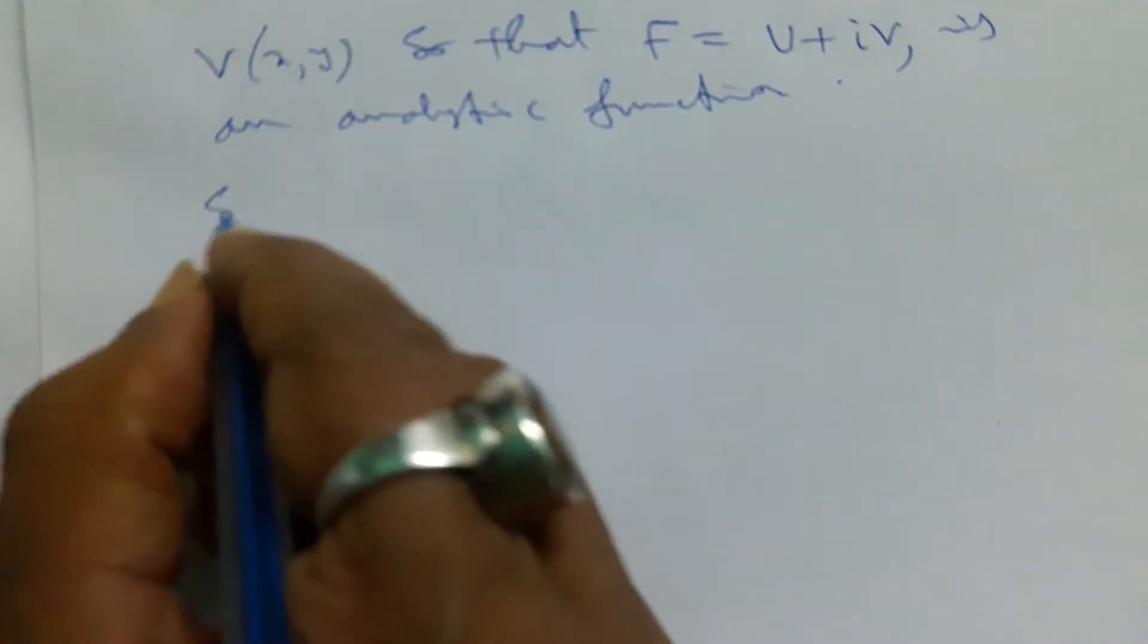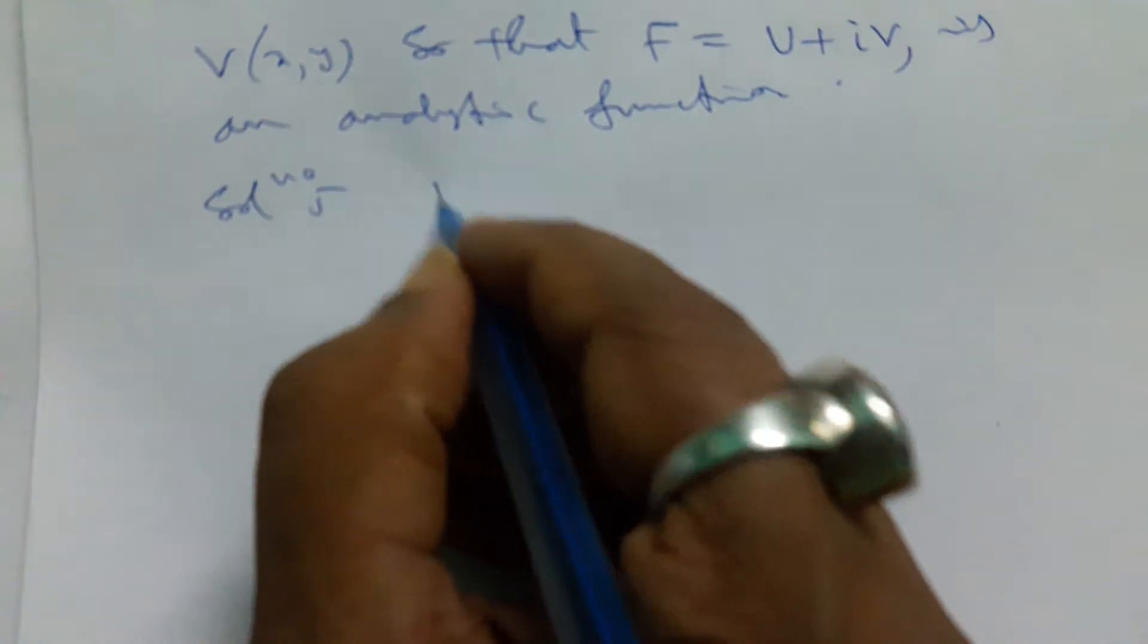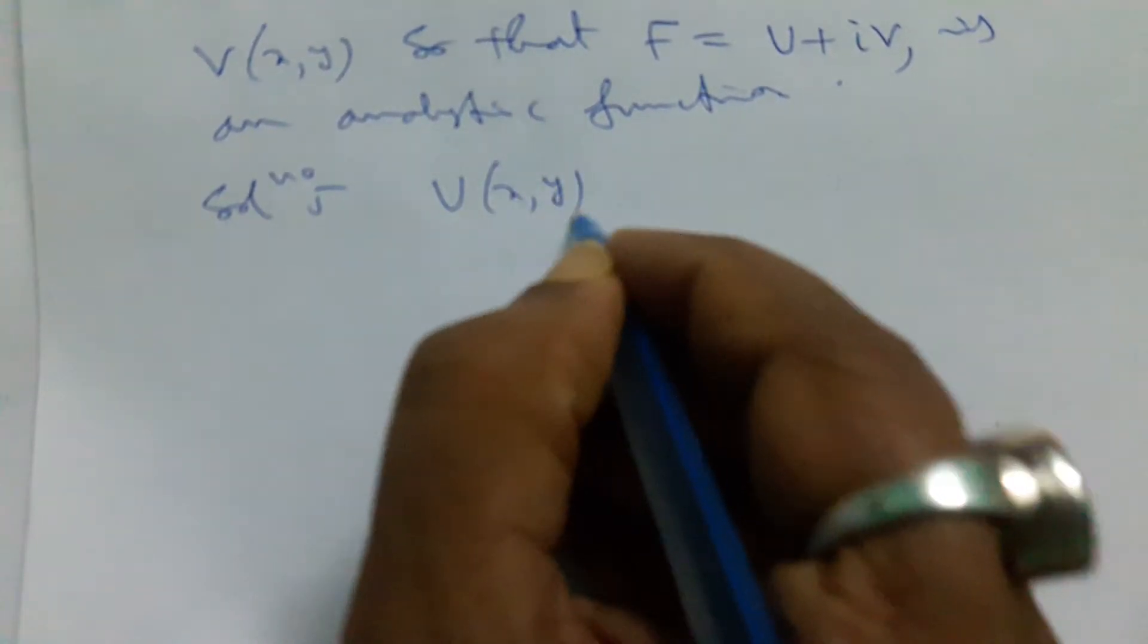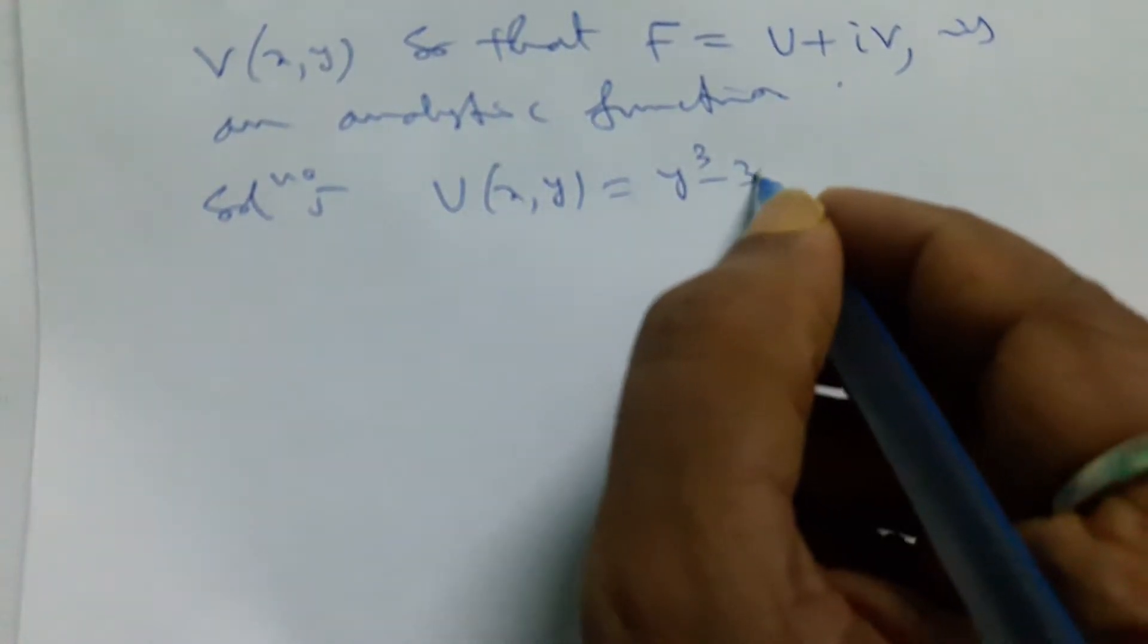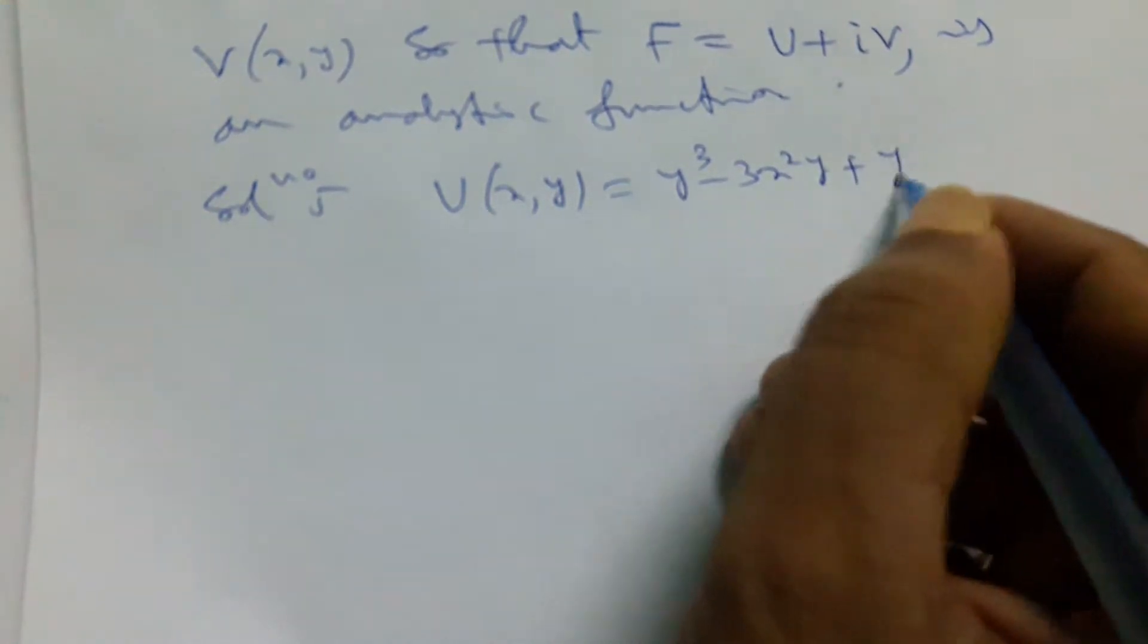Now let us take the part of solution. u is the function of xy equal to y cube minus 3x square y plus y.